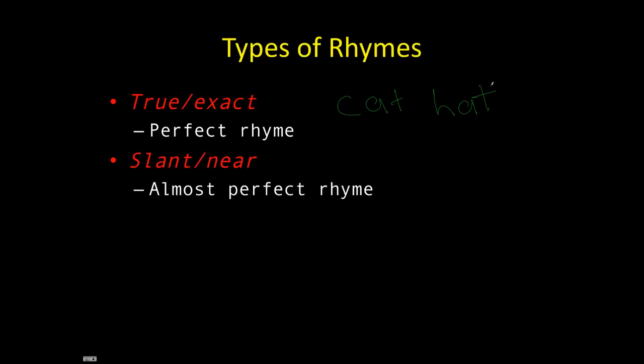We also have slant or near rhymes, which is an almost perfect rhyme. For example, won't and want. They sound like they're almost a rhyme, but they aren't quite.